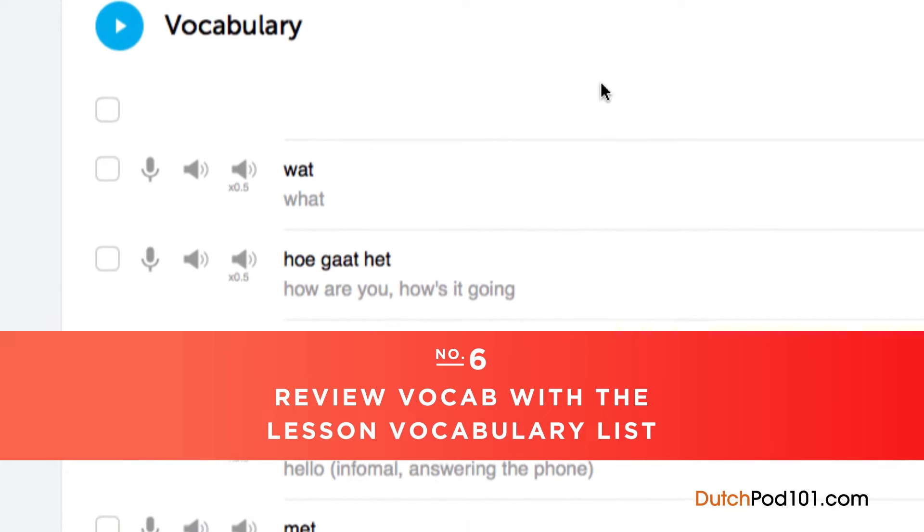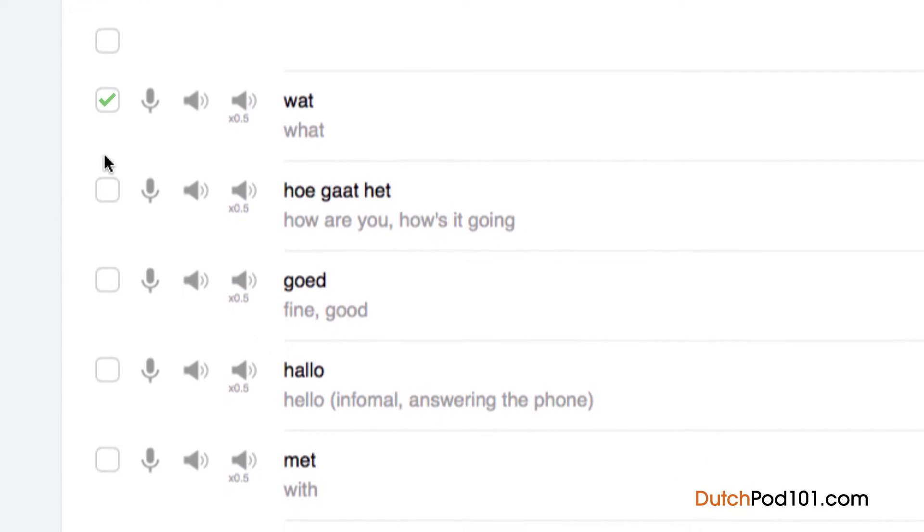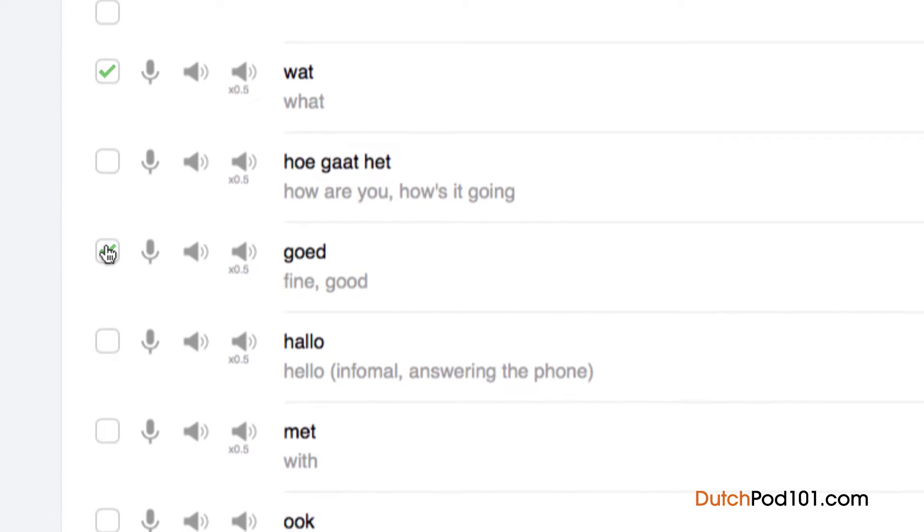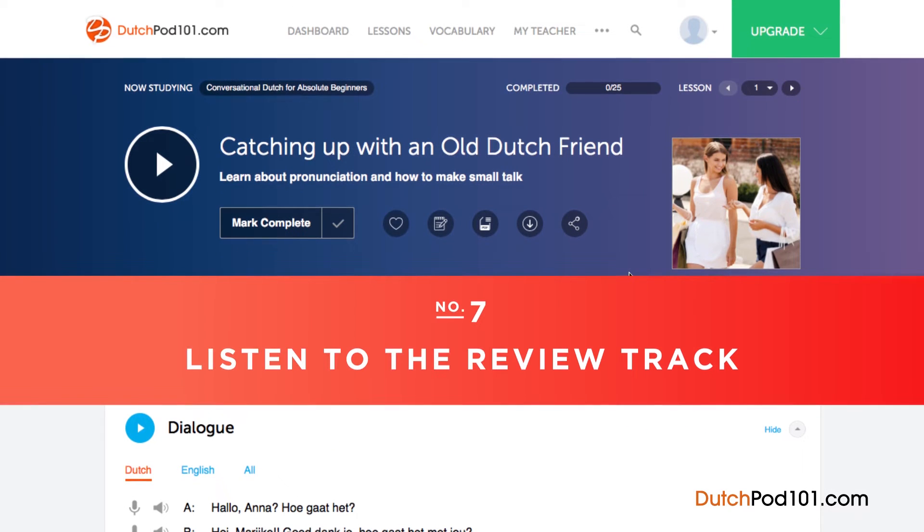Number six, review vocab with the lesson vocabulary list. Vocabulary words are the building blocks of language. You can save vocab words taught in each lesson by clicking on Add to Word Bank. Want to drill the words with smart flashcards instead? Just click on Add to Flashcard Deck to do so.